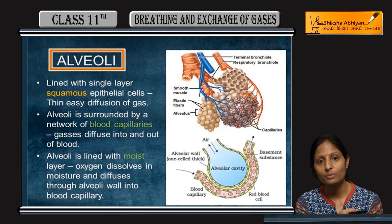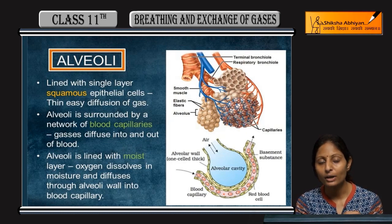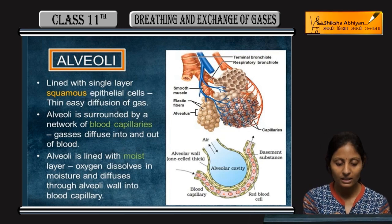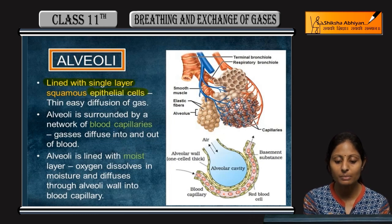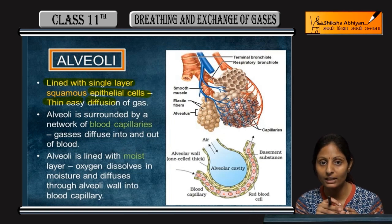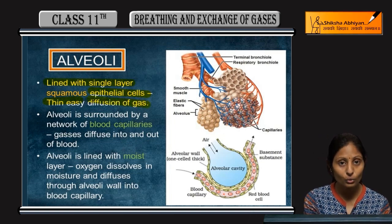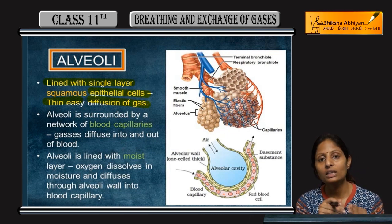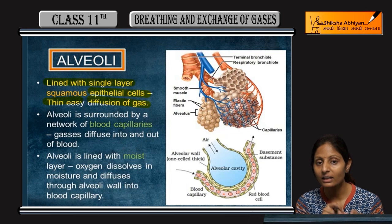The next part of the respiratory system is the alveoli. Alveoli is the endpoint of the bronchioles. It is lined with a single layer of squamous epithelium cells. This epithelium cell layer is a very thin structure of the alveoli, and it is thin for easy diffusion of gases, because it has to exchange gas — that is why the epithelial layer is of a very thin nature.